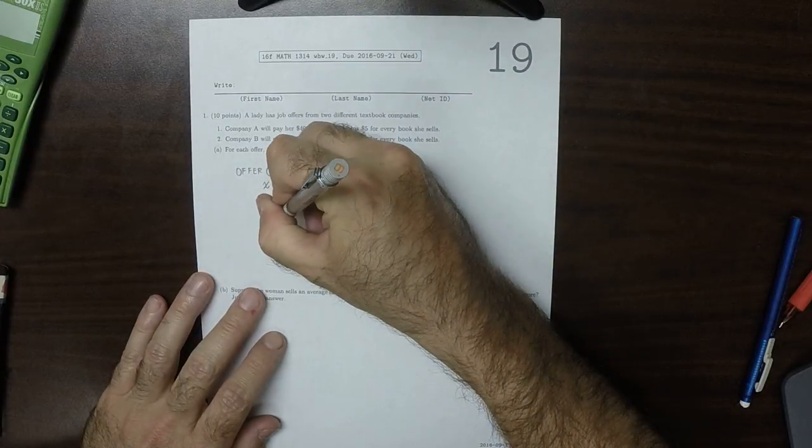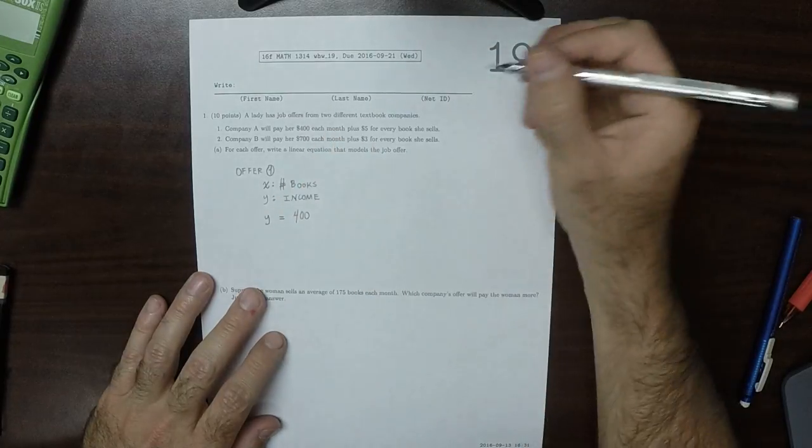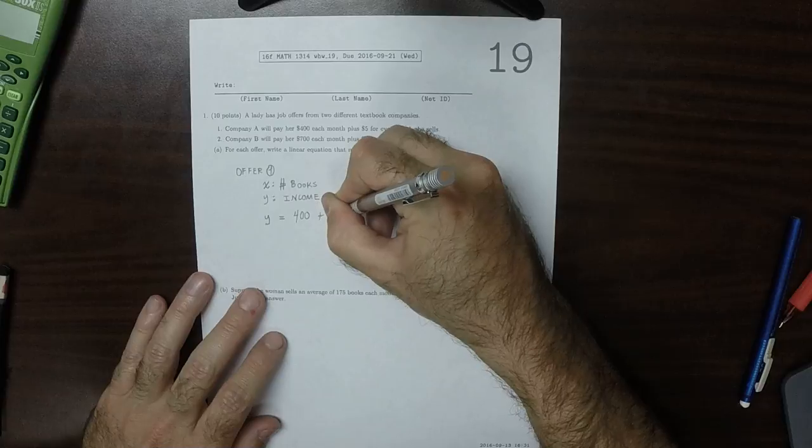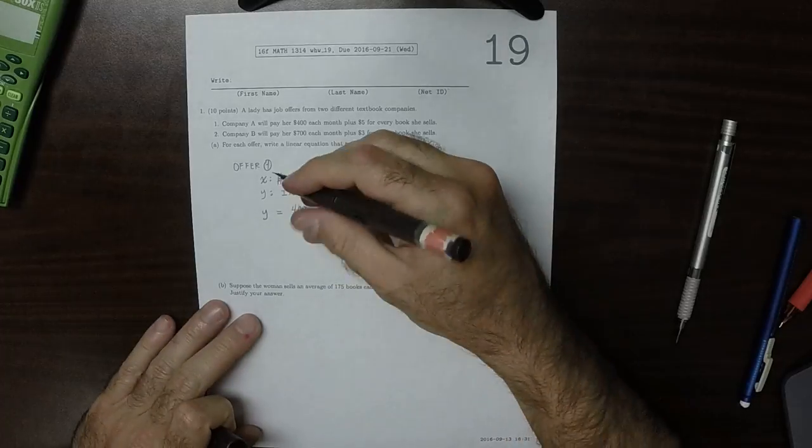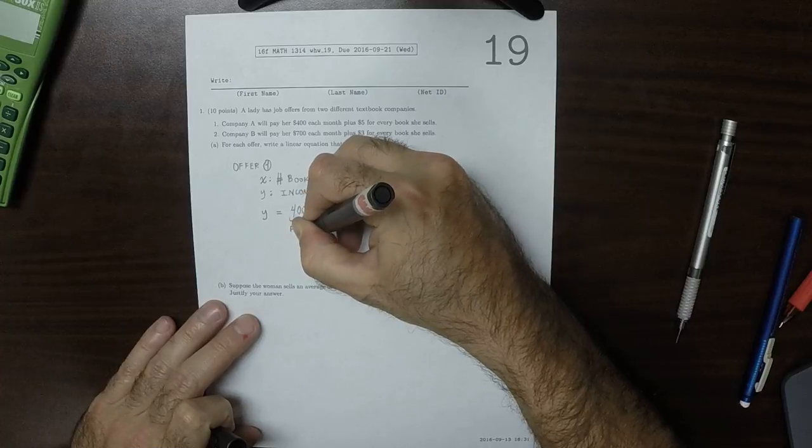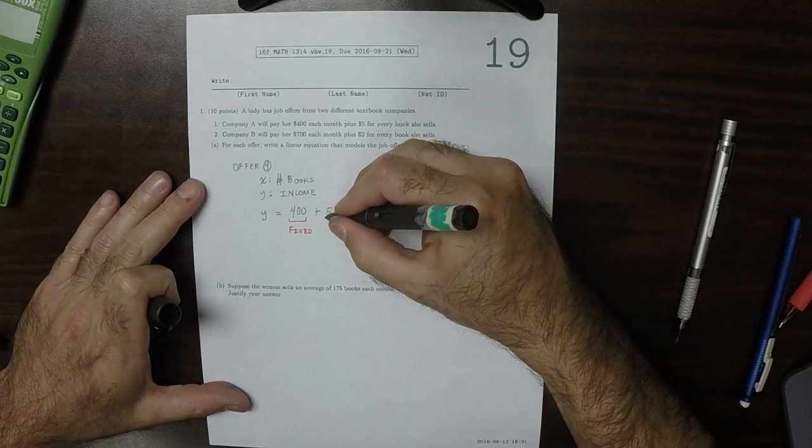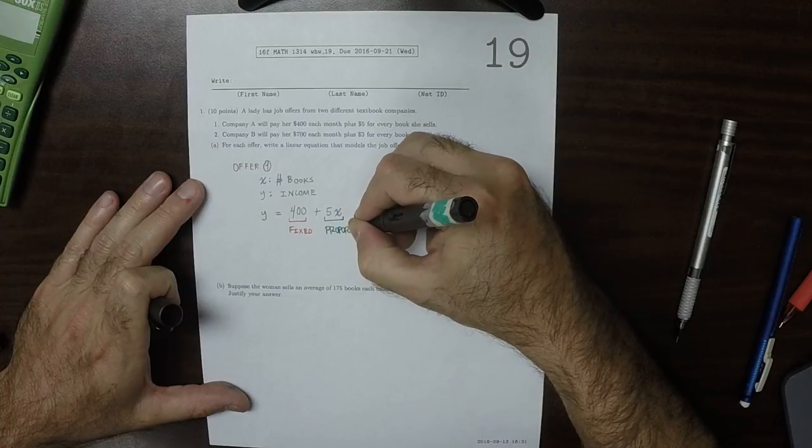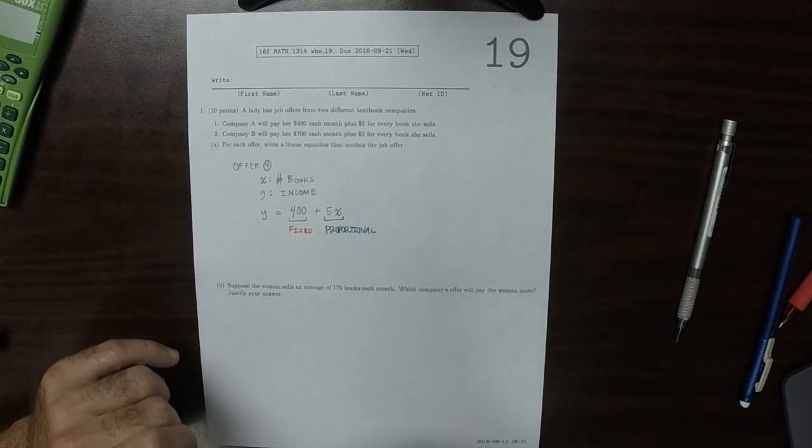It's saying that y is 400 a month, so you always get 400, and then plus 5 multiplied by the number of books. So this is the fixed income, no matter what she gets 400, and this is the proportional income. So that's offer 1.